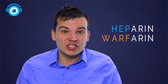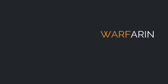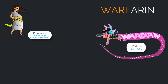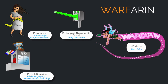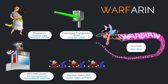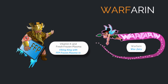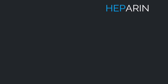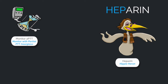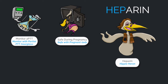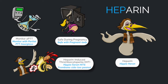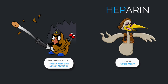Let's contrast the differences one more time. Warfarin — the war fairy — is contraindicated in pregnancy. Monitor PT and INR. Warfarin has a prolonged therapeutic onset, and you need to teach patients to maintain the same diet. Antidotes: vitamin K and fresh frozen plasma. Heparin — the hippie heron — monitor PTT. It's safe for pregnancy, it's instantly therapeutic. Don't forget the side effect heparin-induced thrombocytopenia and the antidote protamine sulfate.